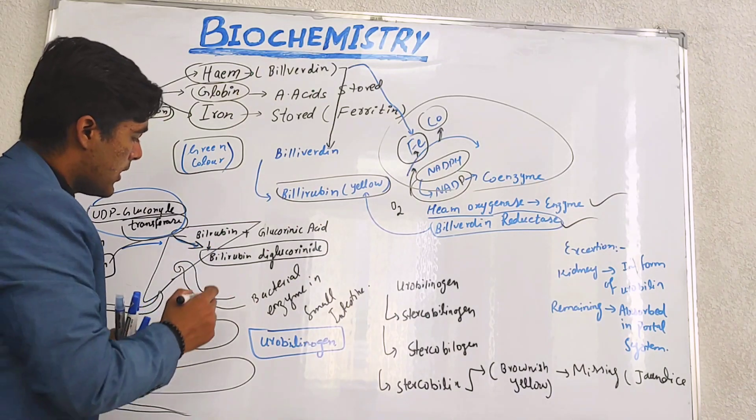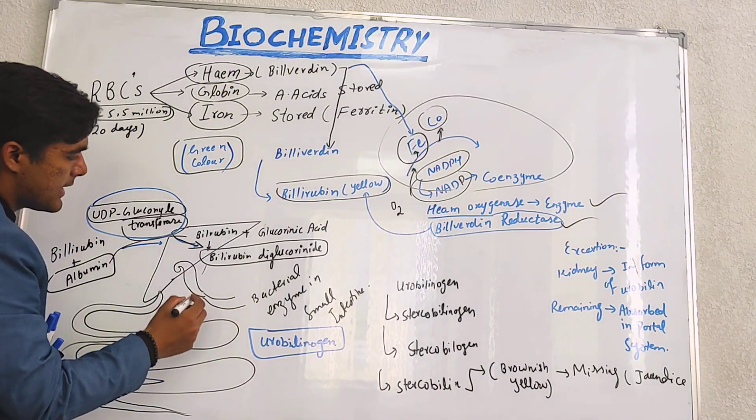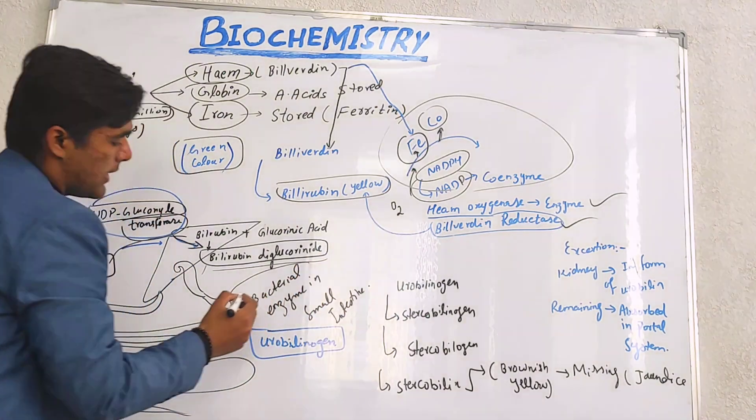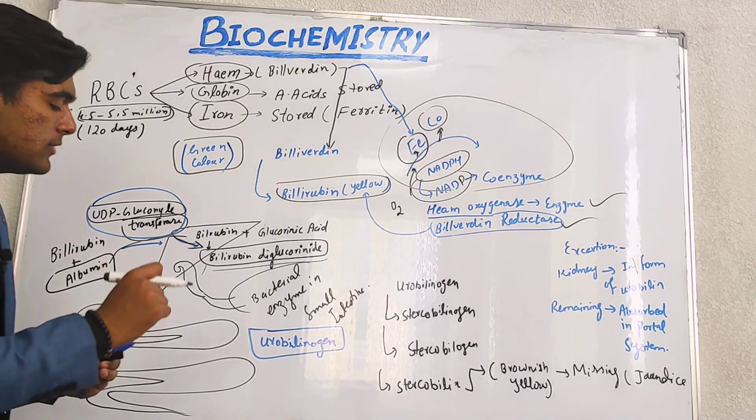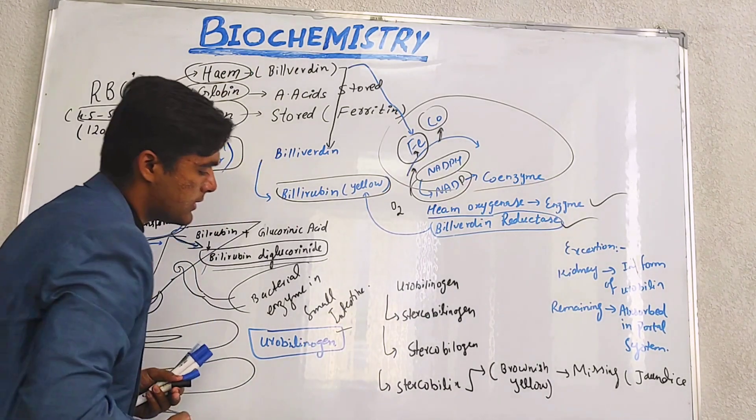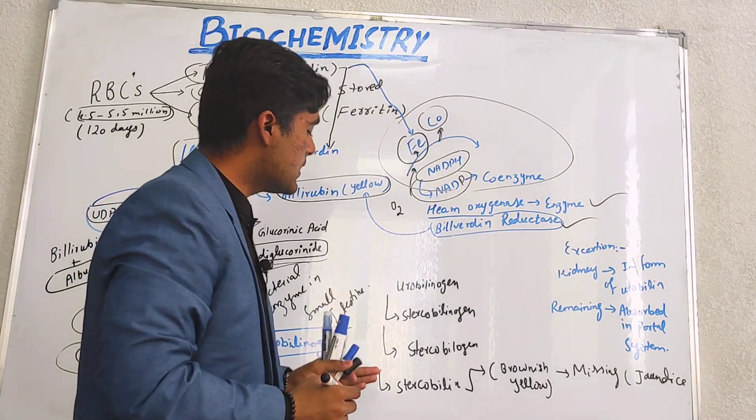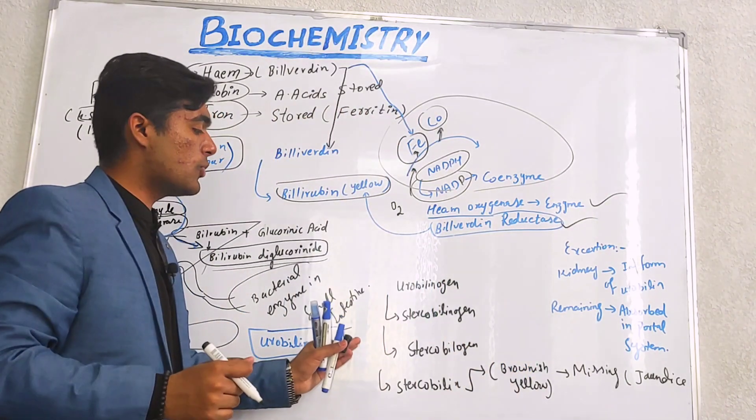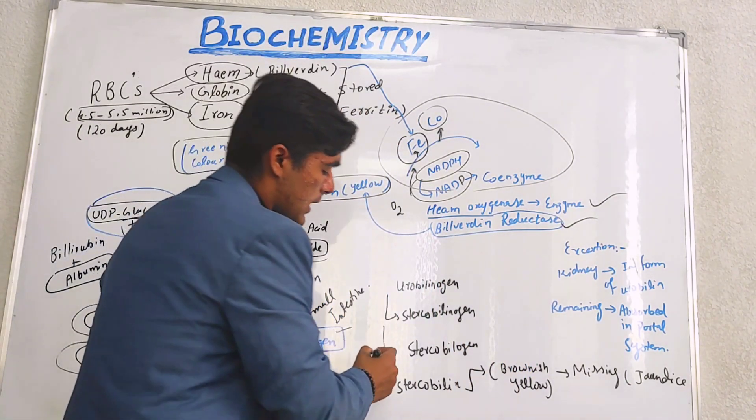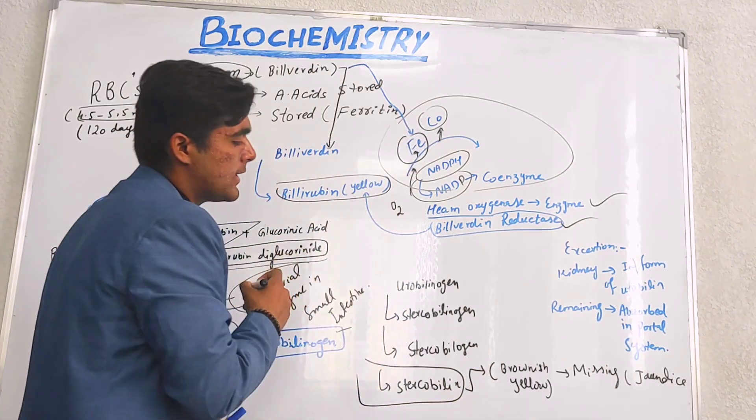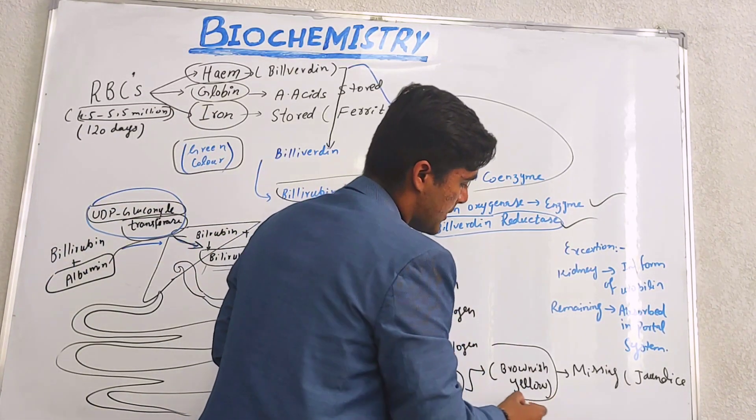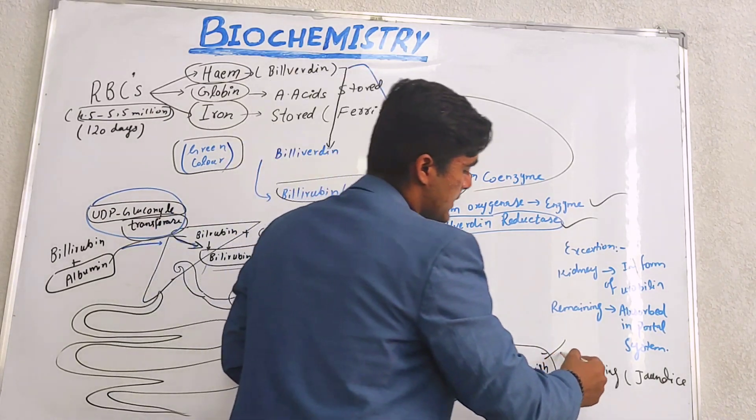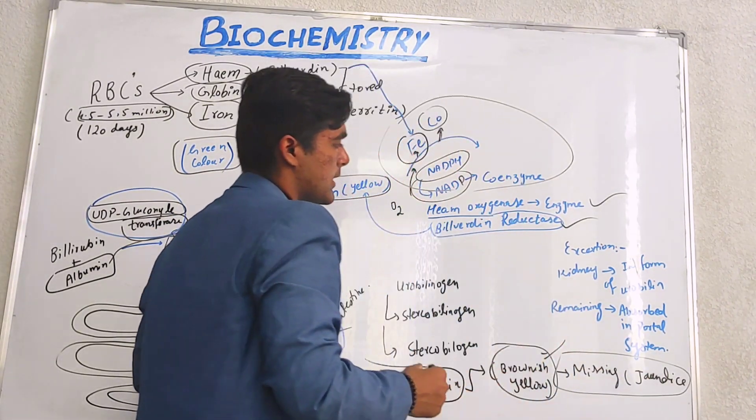When it comes to the small intestine, this diglucuronide will combine with bacterial enzymes and the formation of urobilinogen occurs there. Then urobilinogen will convert into stercobilinogen, and in the large intestine in stool it is converted into stercobilin and urobilin, which is a brownish yellowish pigment that gives color to the stool. If it is missing, jaundice is going to occur in our body.